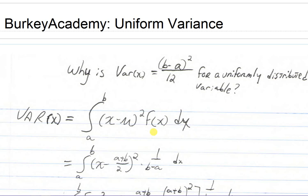In this video, I'm going to answer the question about where does this formula for the continuous uniform distribution variance come from — namely, this formula right here. If you have a uniform distribution where at every point the probability is the same, especially a continuous one, why does the variance formula turn out to be this thing where there's a 12 in the bottom? I'm not going to go through every little step, but I have this derivation of why it's (b minus a) squared over 12 on my website, www.berkeyacademy.com, and the file is called something like 'uniform variance.'